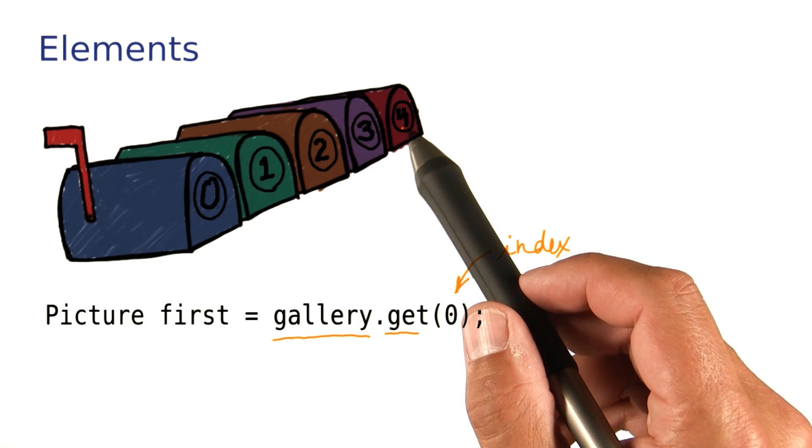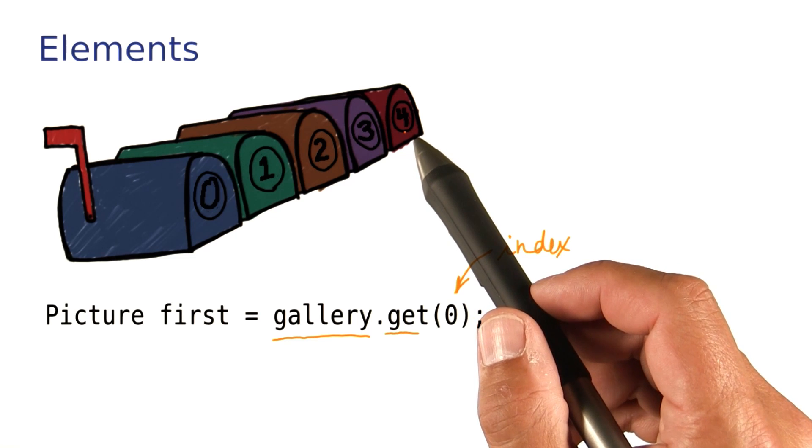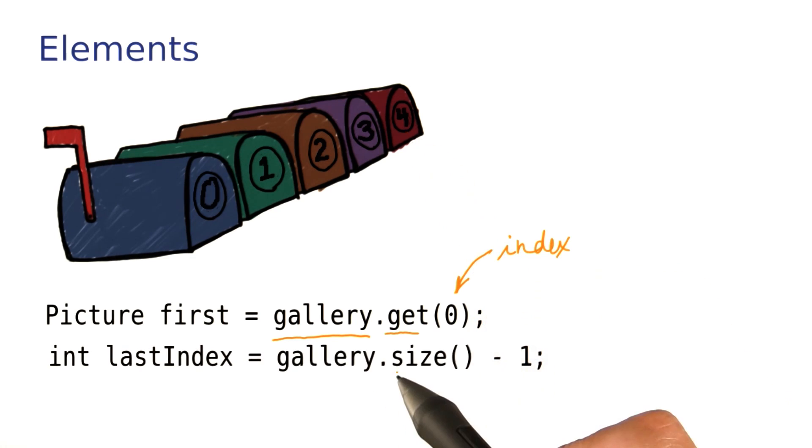What if we wanted to get at the last element? Then we need to know how many elements are stored in the ArrayList at this time. The size method tells us that. So gallery.size is the number of elements currently stored in this particular ArrayList. Since the first index is 0, the last index is 1 less than the size.